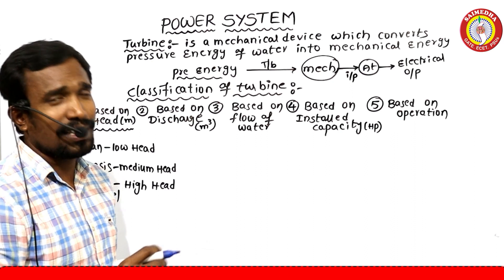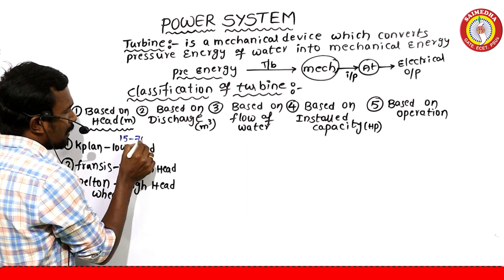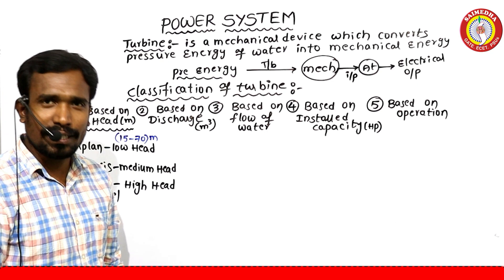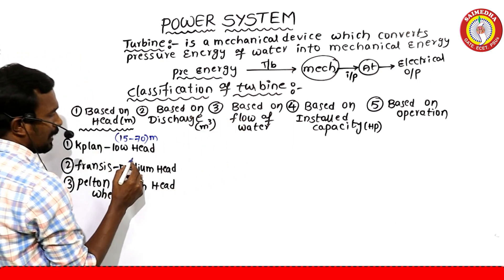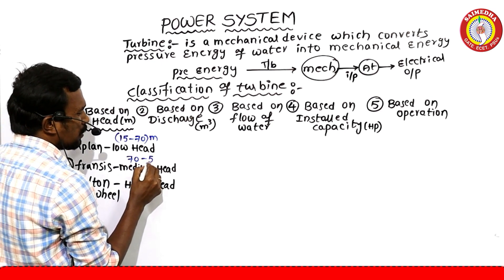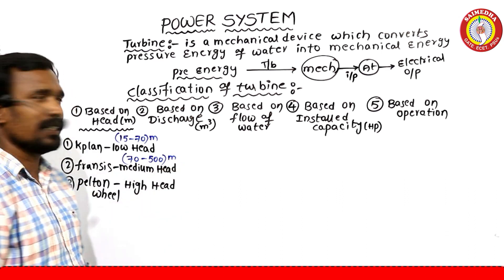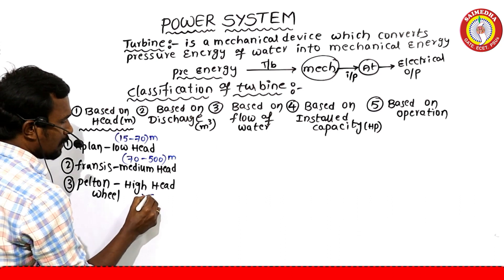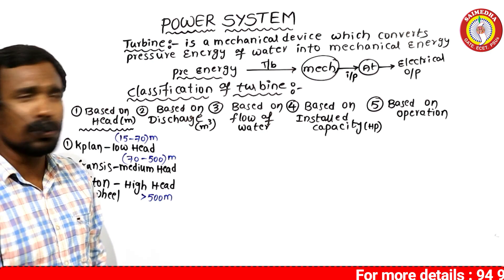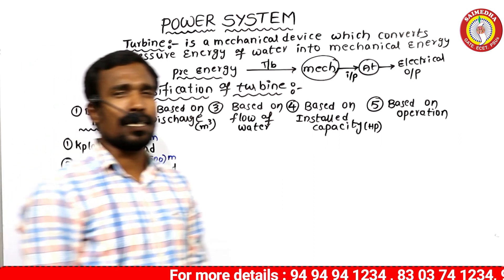What is the low head range? It is 15 to 70 meters of head. What is the medium head? It is 70 to almost 500 meters of head. Greater than 500 meters is the High Head Turbine range. So Kaplan, Francis, and Pelton Wheel are classified by these three head ranges.